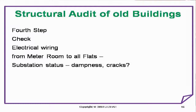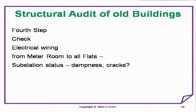Fourth step: check electrical wiring from meter room to all flats, substation status, dampness, and cracks. Fifth step: check lift and machine room — type of maintenance contract, whether renewed, last inspection by maintenance engineer, ropes or any parts that need to be changed, and the life of the lift — 10 years. Check the lift shaft for cracks, dampness, and any other problems.